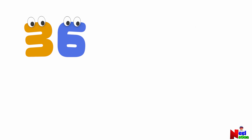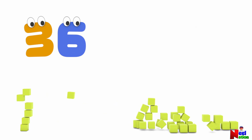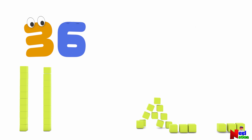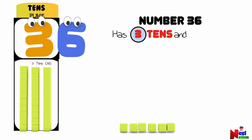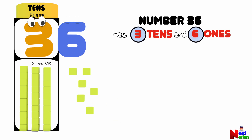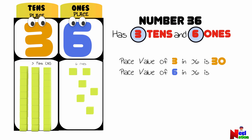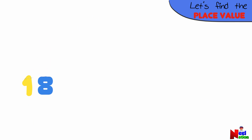Let's take number 36. It is also a two-digit number. Take 36 cubes and let's make groups of tens. We have 3 tens and there are 6 remaining cubes. Number 36 has 3 tens and 6 ones. The place value of the digit 3 in number 36 is 30, and the place value of 6 in the number 36 is 6. So 30 plus 6 makes a total of 36.